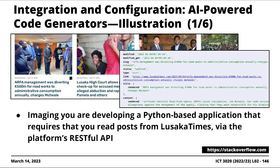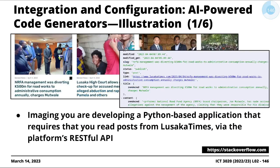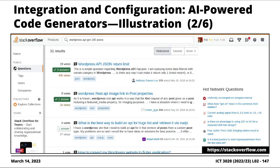Here's just some random example of how you'd use something like this. Imagine you have this problem where you're asked to develop a Python-based application — a Python script really — that requires you to read the posts from the Lusaka Times API. Now, if you're a programmer, you agree with me that the very first thing you're going to do is go online and start searching: how do I extract posts using WordPress API? And then you start clicking on links, eventually finding yourself on Stack Overflow. But the idea is this process you're going through is counterproductive.